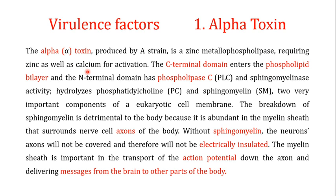The C-terminal domain of the alpha toxin enters into the phospholipid bilayer, while the N-terminal domain contains the active site. The N-terminal domain has both phospholipase and sphingomyelinase activity — meaning the alpha toxin has the ability to hydrolyze phosphatidylcholine present in the cell membrane, and also to hydrolyze sphingomyelin.